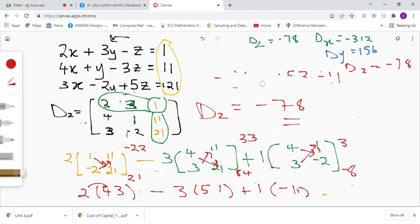Let me just make space here. So x equals dx over d. dx is negative 312.